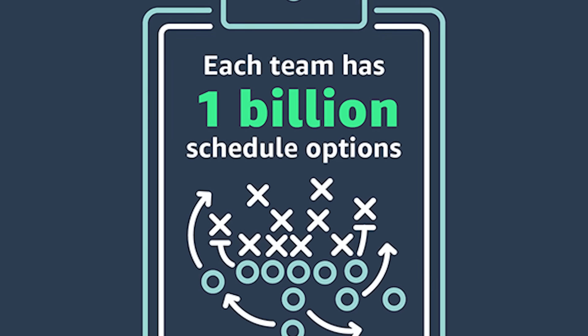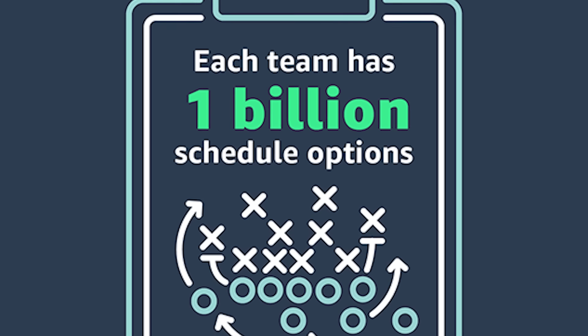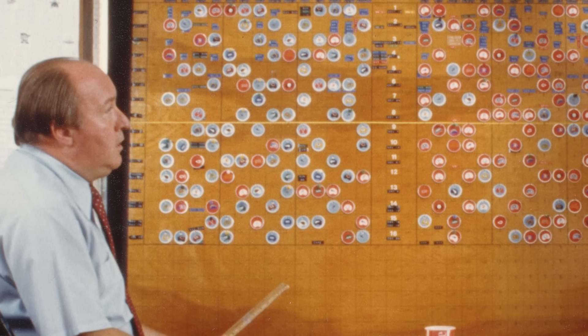According to AWS, since you've got 32 teams playing 272 games across 18 weeks, each individual team actually has one billion schedule options.